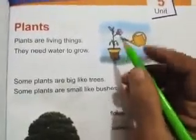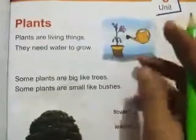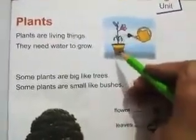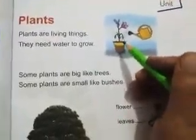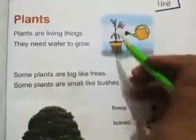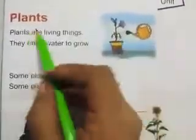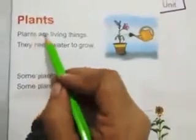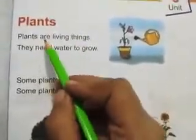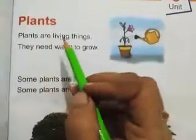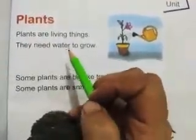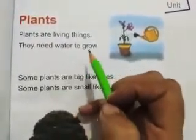They need water to live and grow. Like us — we need food to live and grow. Plants need water to live and grow. Plants are living things; they need water to grow.